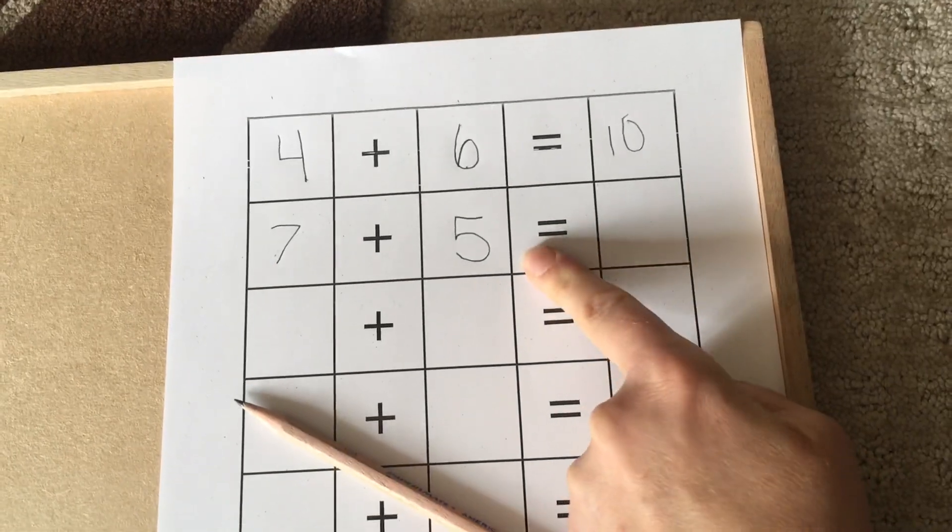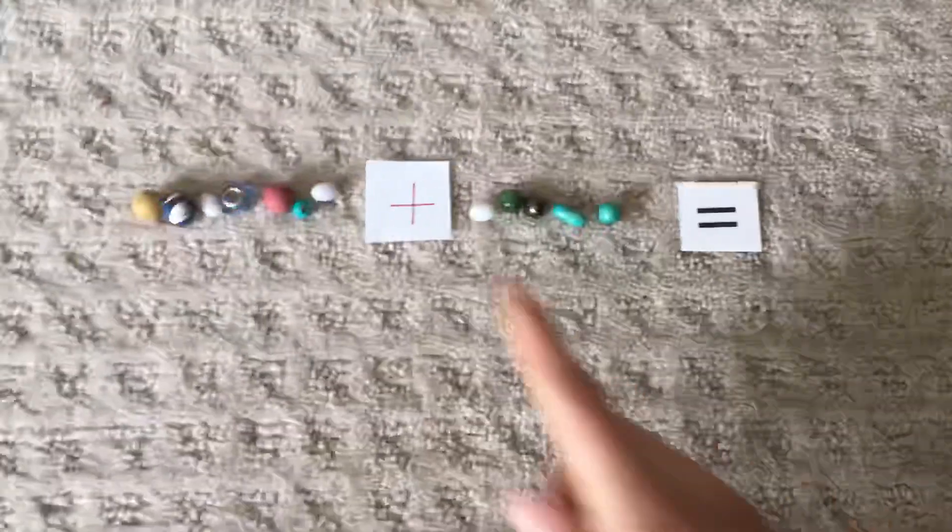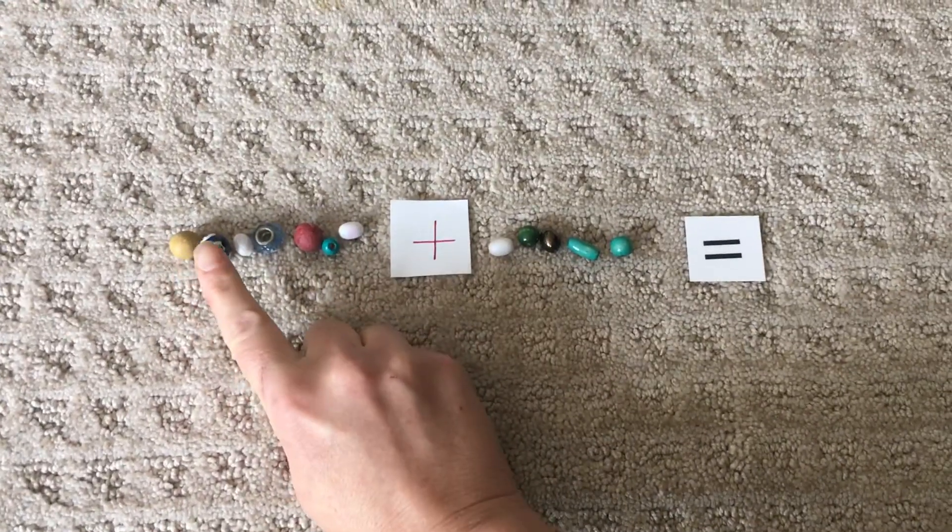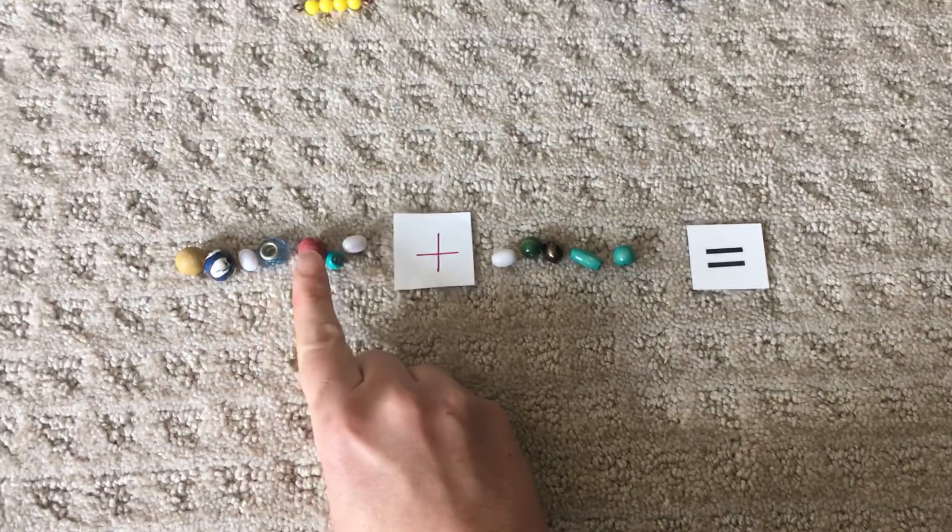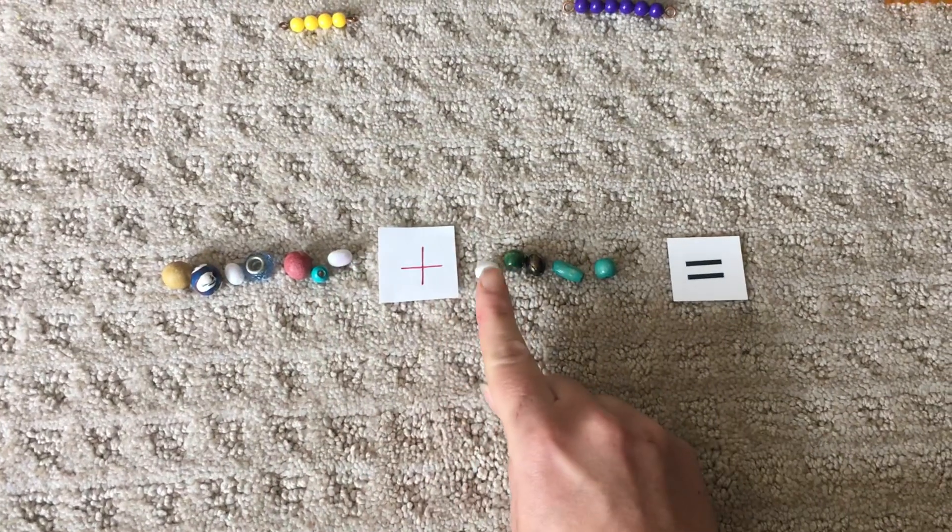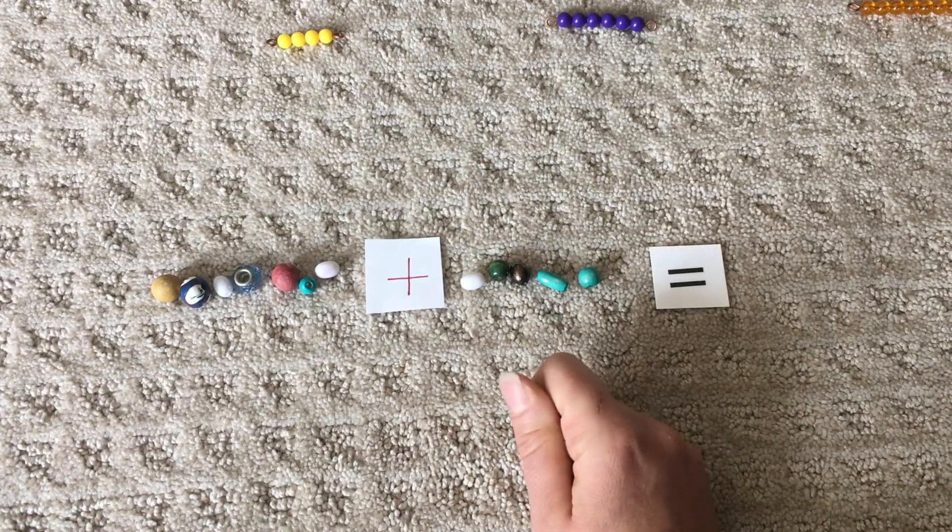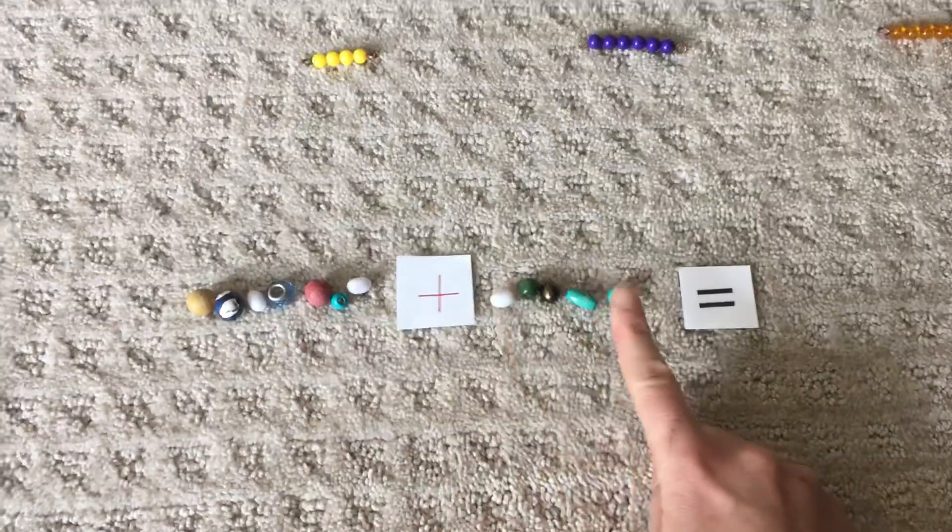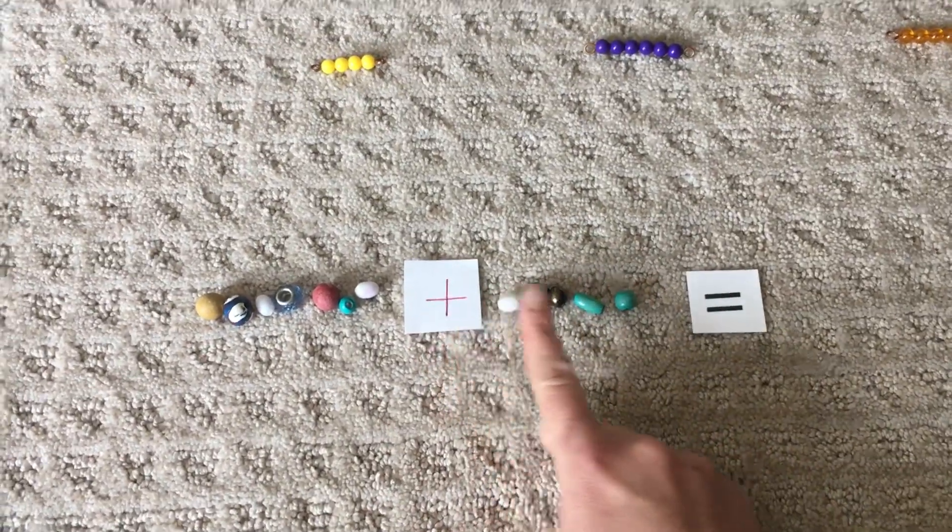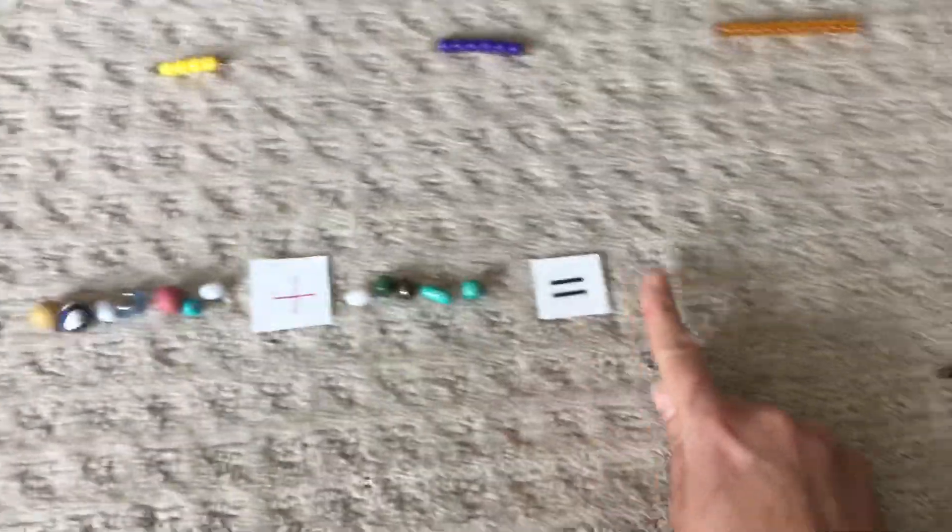Well, how many do they equal when we put them together? I wonder. Well, let's count and find out. One, two, three, four, five, six, seven, eight, nine, ten, eleven, twelve. So all together, seven plus five equals twelve.